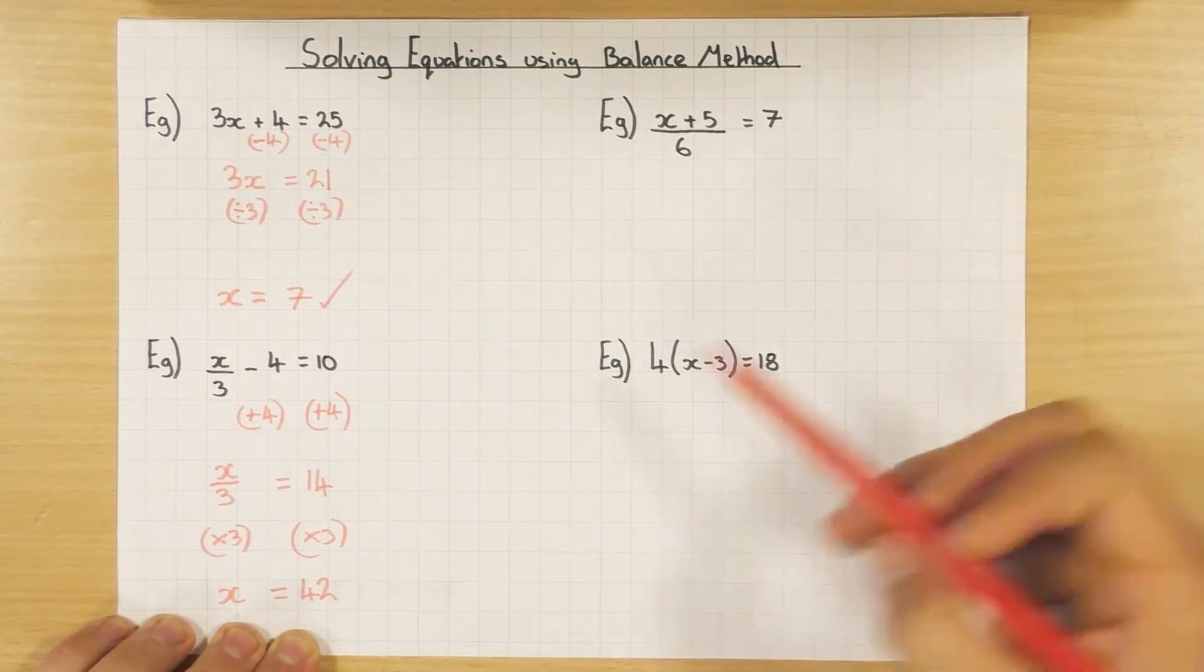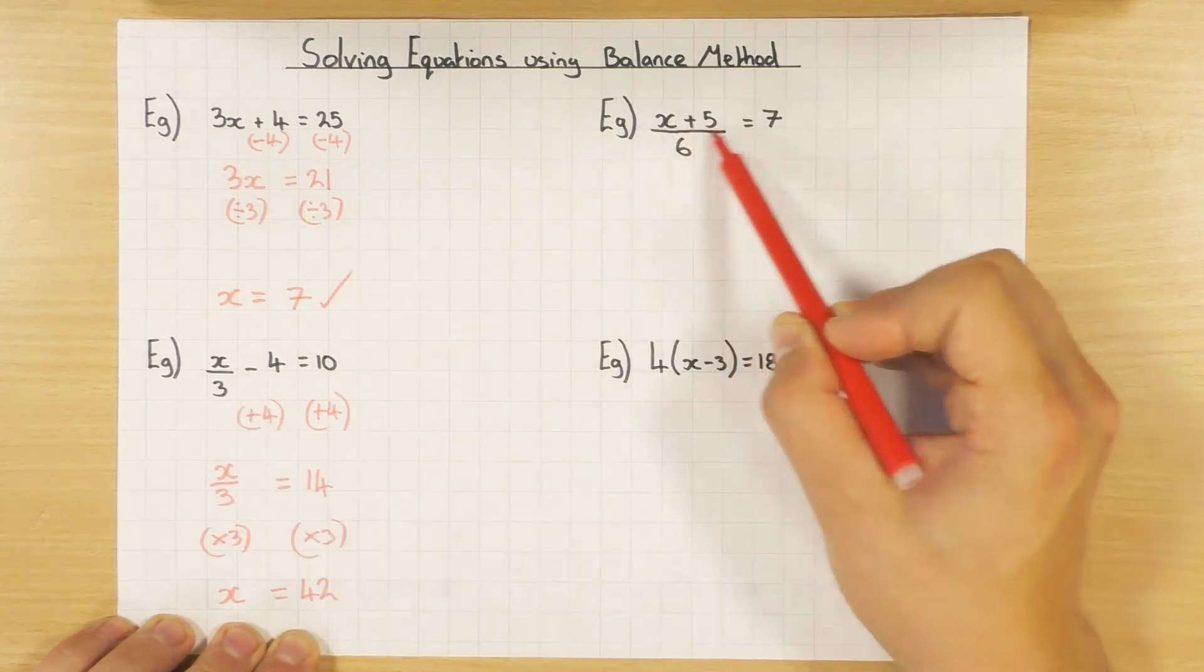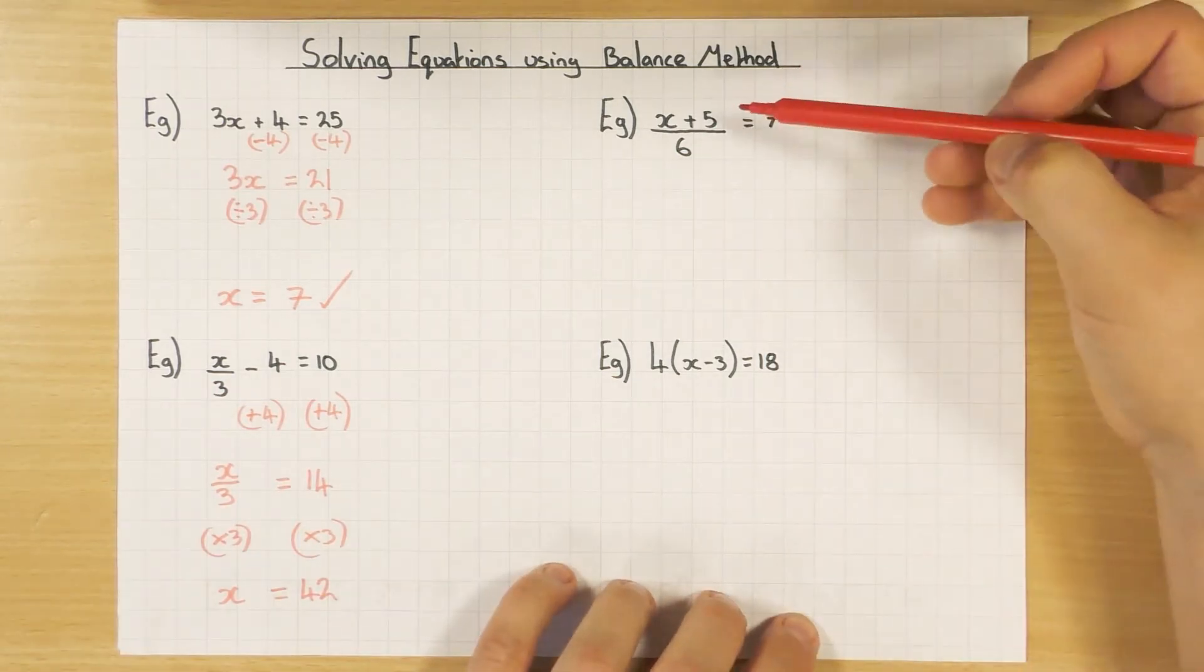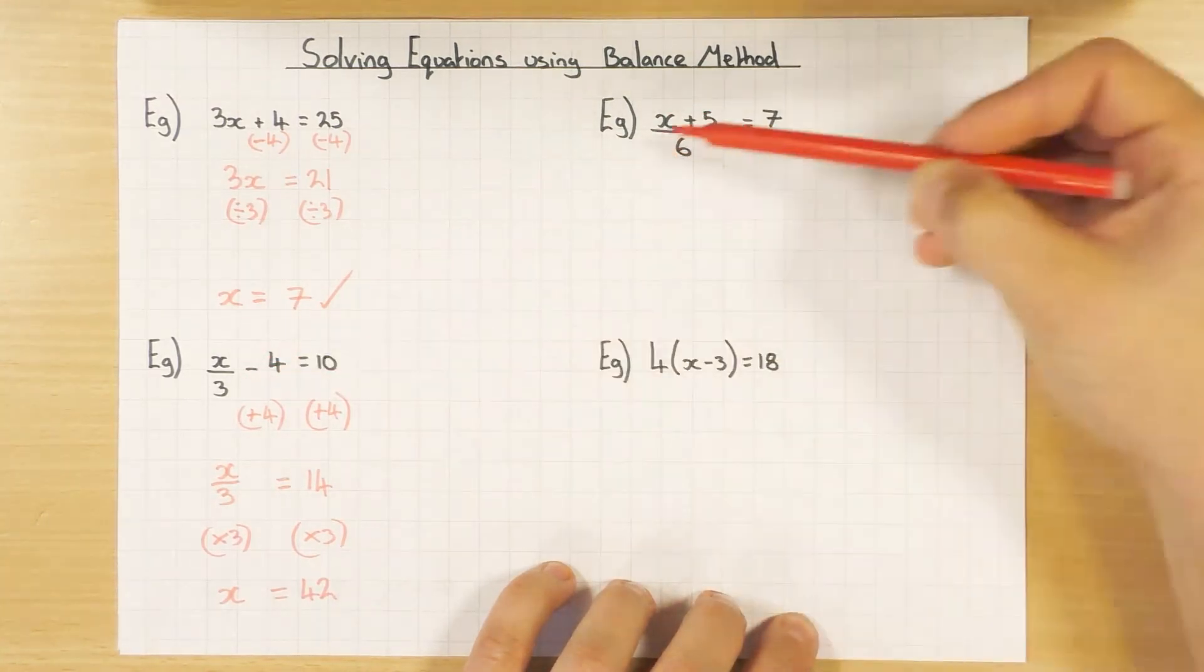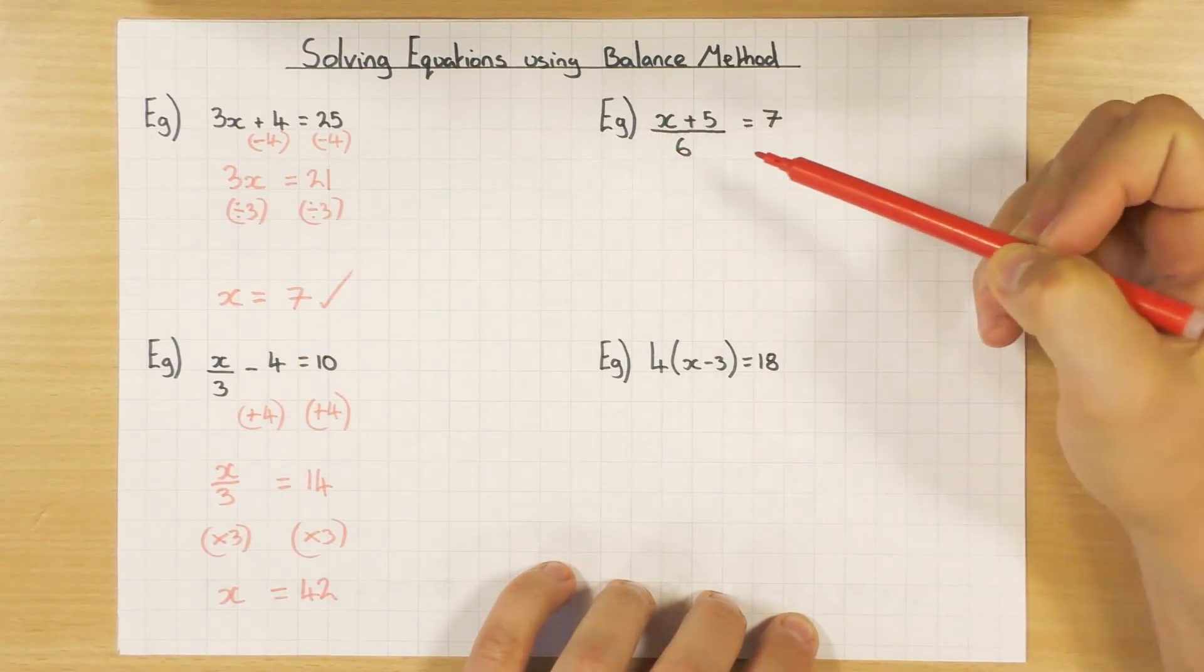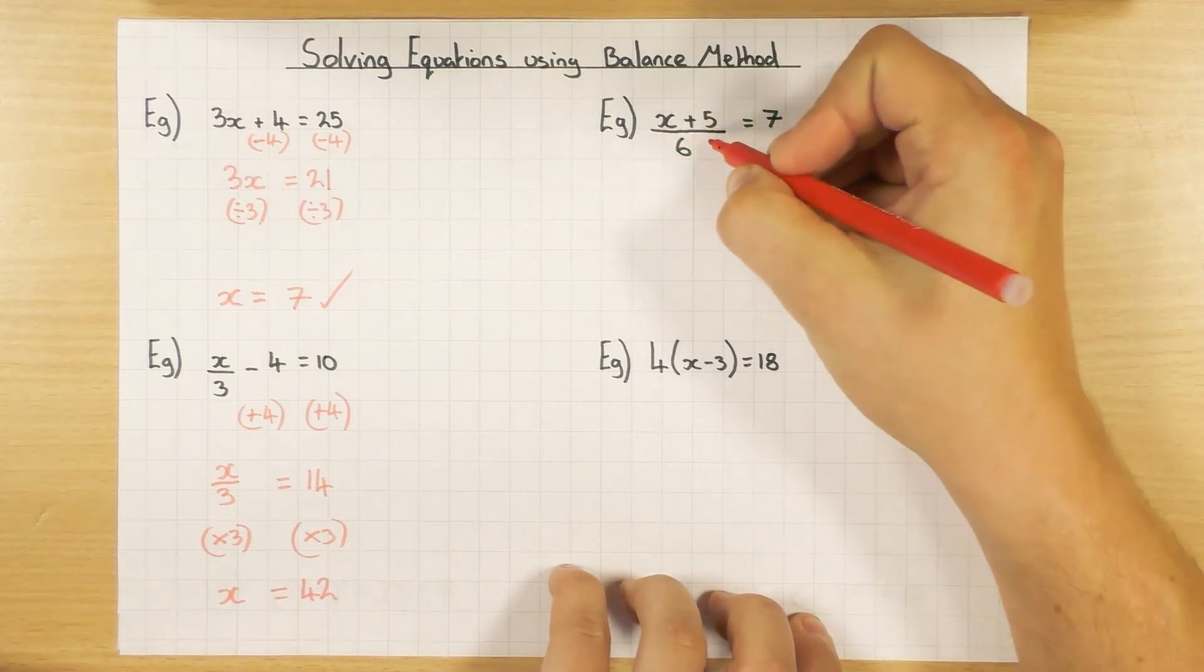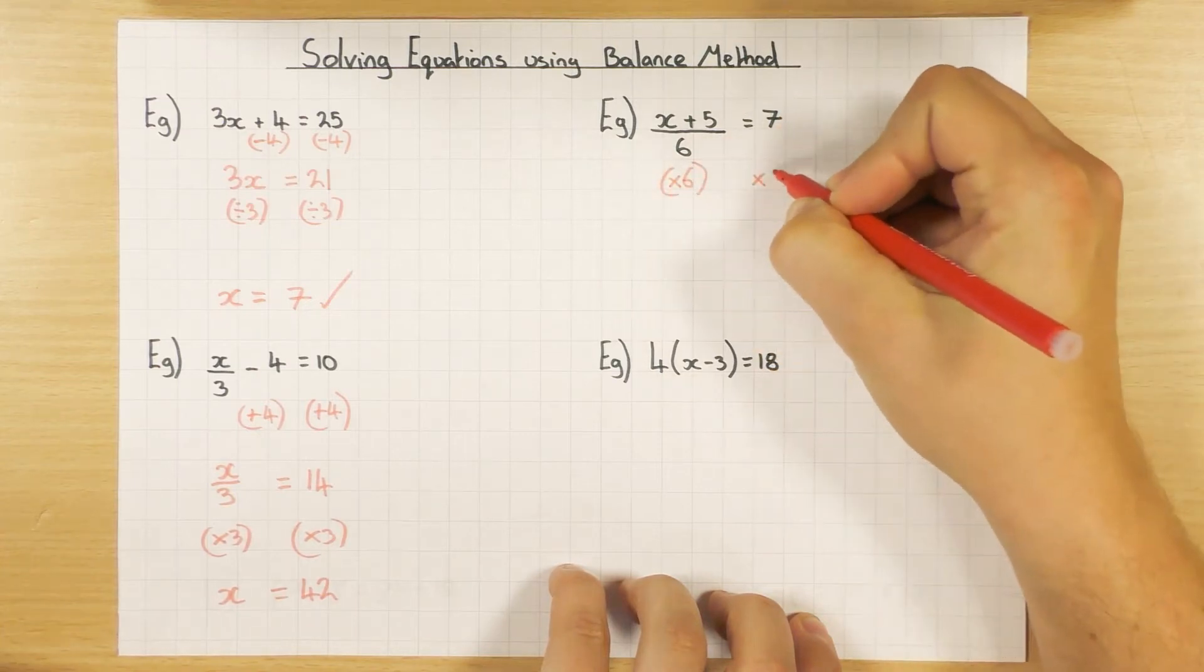This one up here, ever so slightly different. Here, x was divided by 3. Over here, x plus 5 is actually all being divided by 6 in this particular case. So you have to be a little bit careful. To solve this one, over here, I got rid of the numbers. Over here, I can't take away 5. Why? Because as I just said, the whole thing is being divided by 6. So I can't do anything until I get rid of that 6. So to do that, well, it currently is dividing by 6. I do the opposite. So I times both sides by 6.